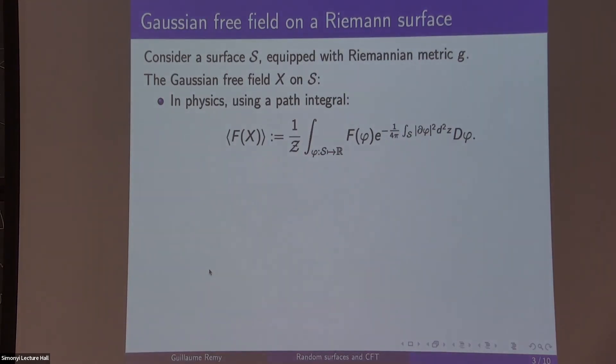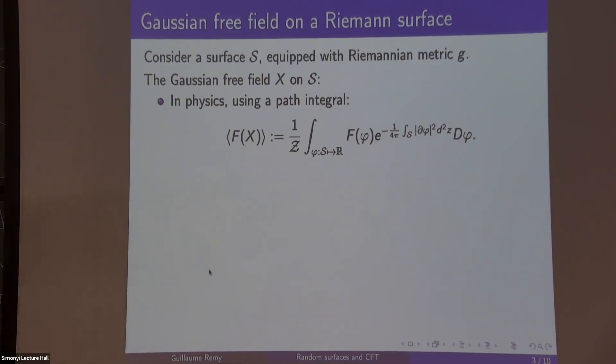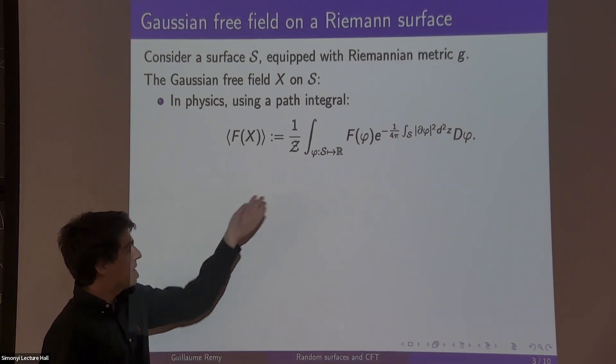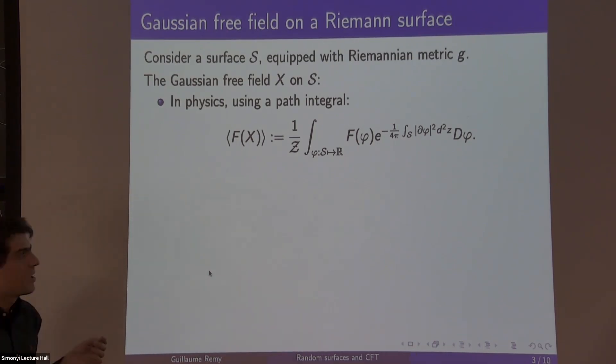So the Gaussian free field, you can think of it defined on any Riemann surface S, with a Riemannian metric g. The metric g is not so important, but the Gaussian free field X, in physics, you would define it by what's called a formal path integral.